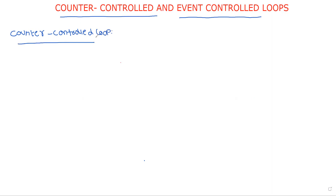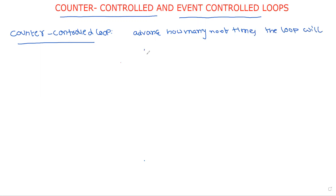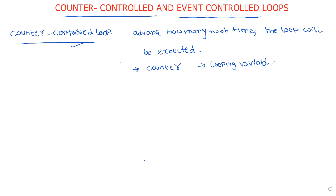The name specifies: if we know in advance how many number of times the loop will be executed, such types of loops are called counter-controlled loops. In this, we use a counter as a loop variable, also called a looping variable, to control the loop.